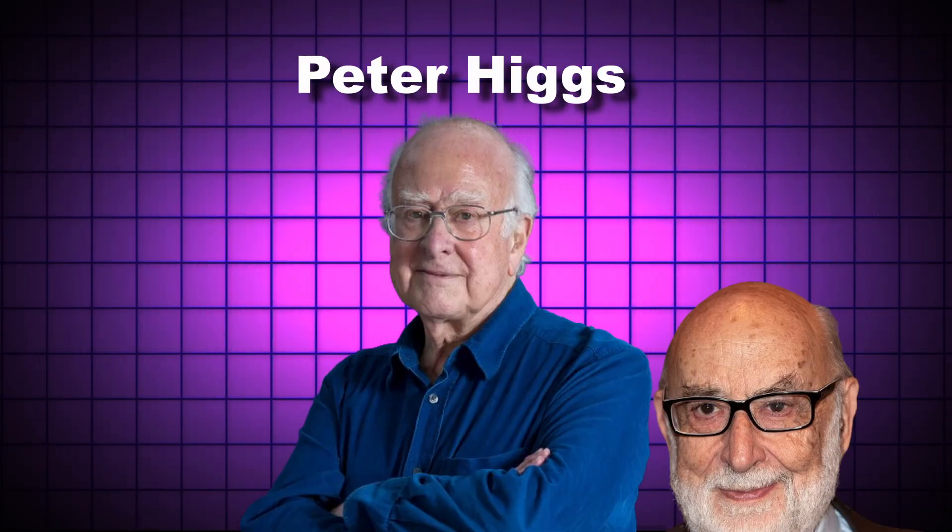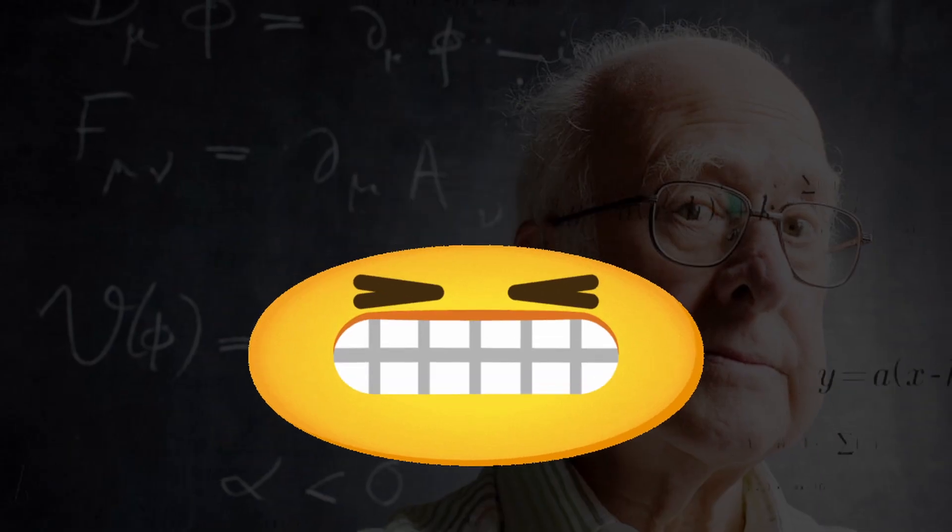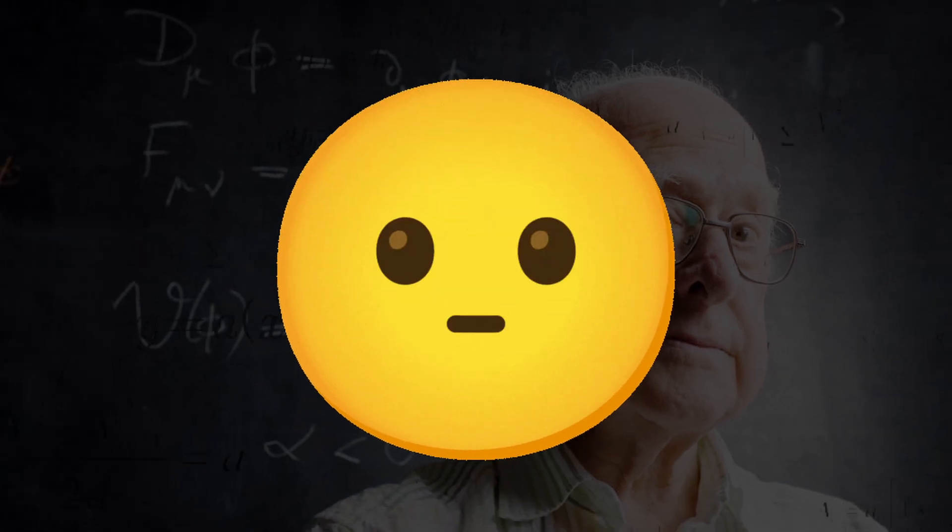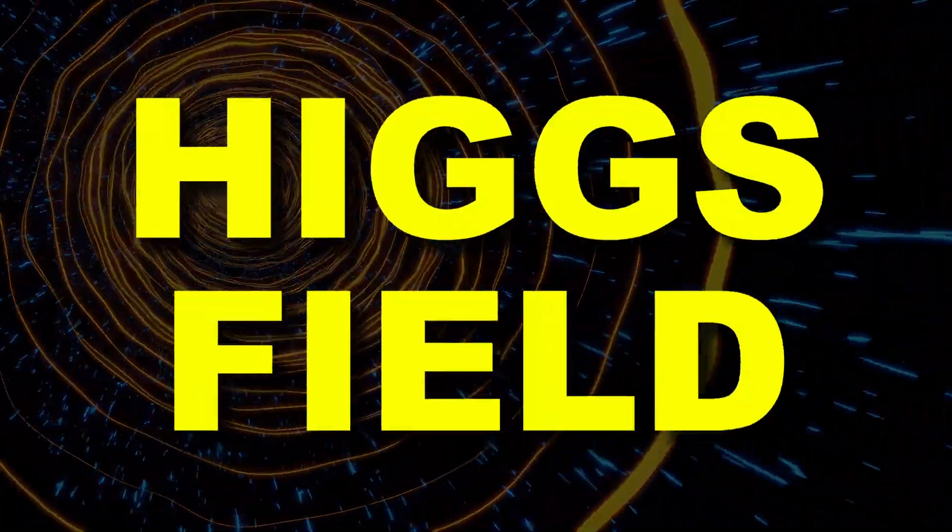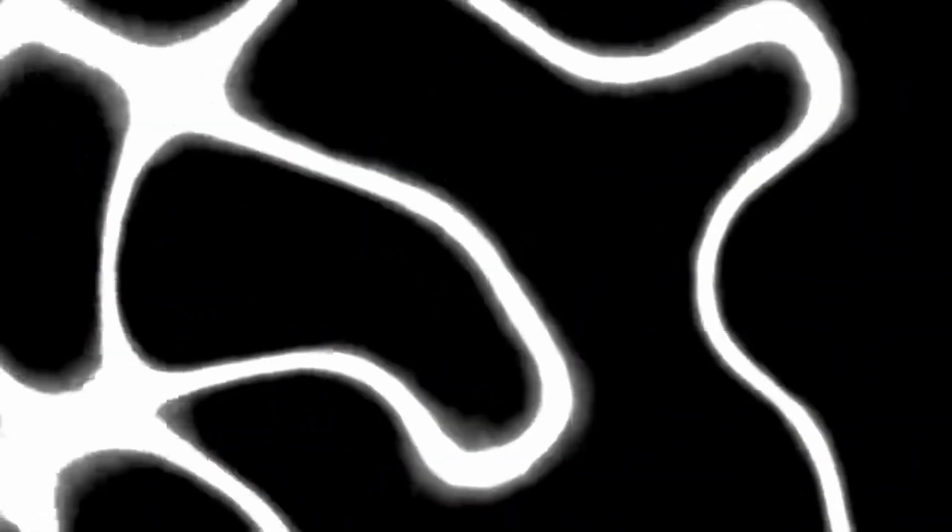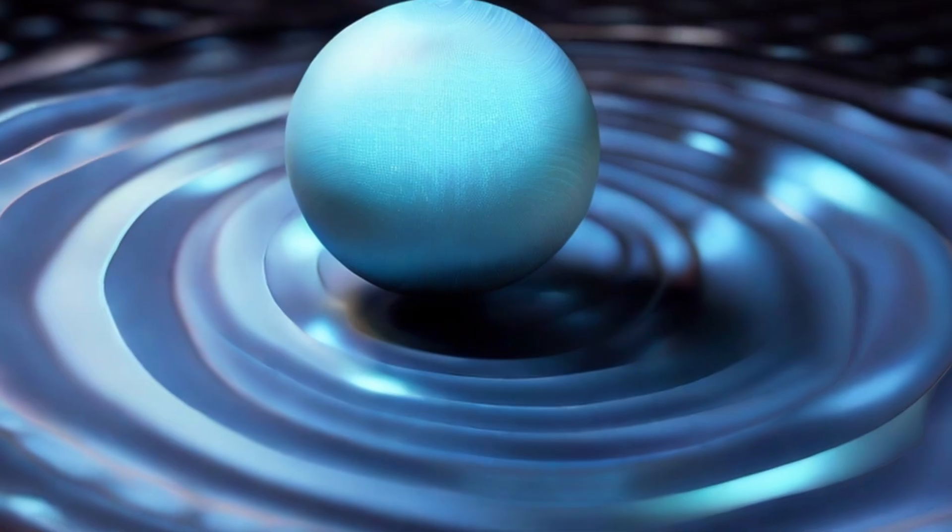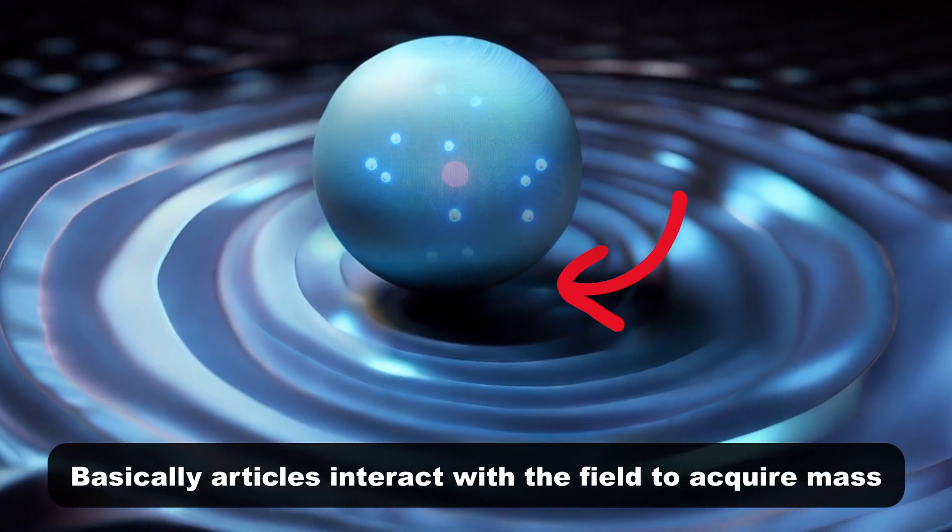Then entered Peter Higgs, Englert and other scientists who proposed a groundbreaking solution. They postulated the existence of a field, a field now known as the Higgs field. According to their theory, particles interact with this field, acquiring mass in the process.